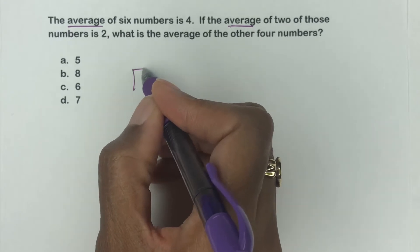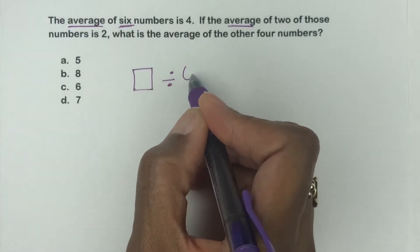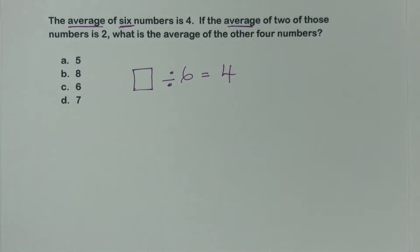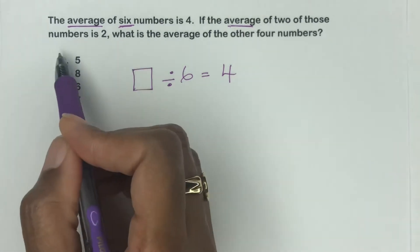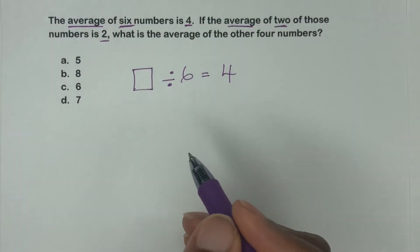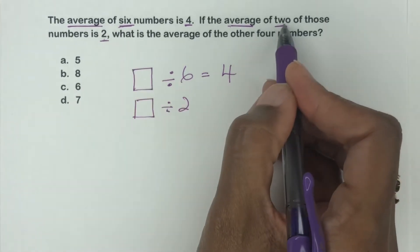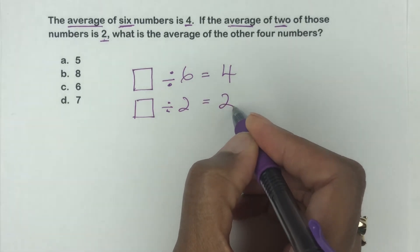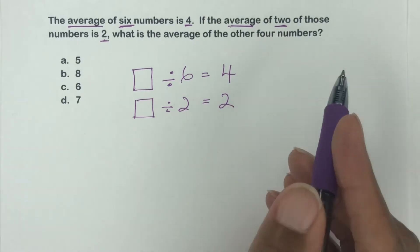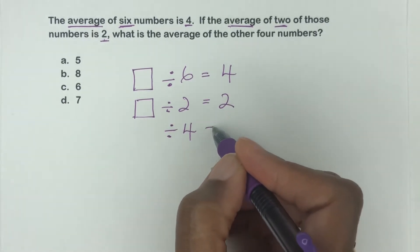So what we're going to do then let's set up a little equation here. So the average of six numbers, so that's how many numbers is, which is going to give us our equal sign four. Then if the average of two of those numbers is two, let's underline all of this stuff. So if the average of two of those numbers, two of those numbers is two,